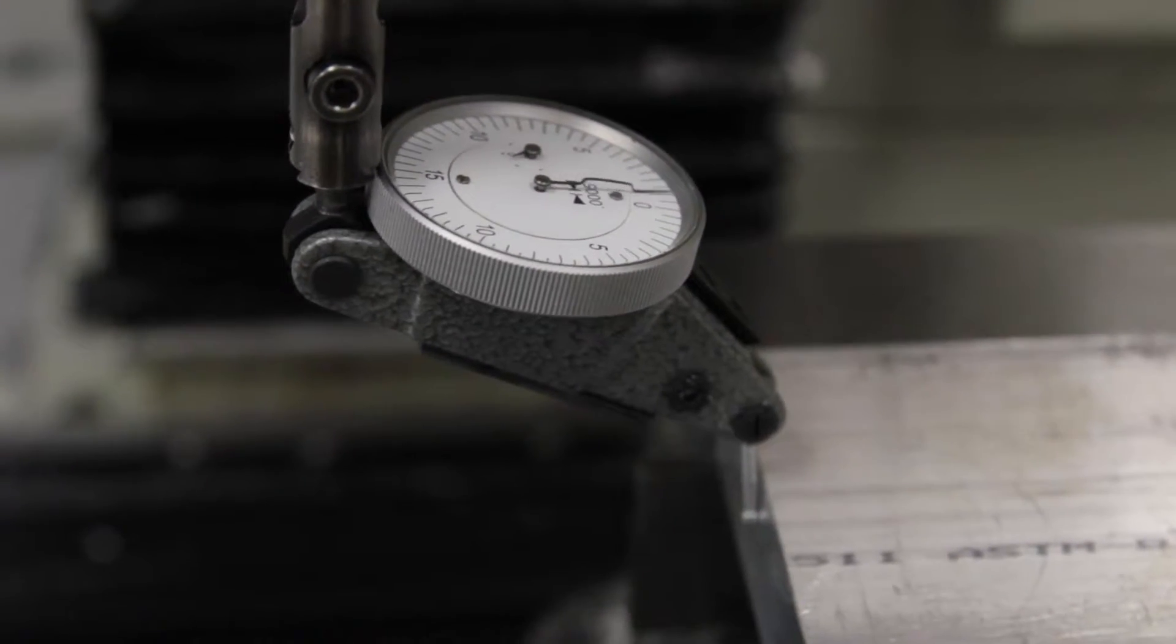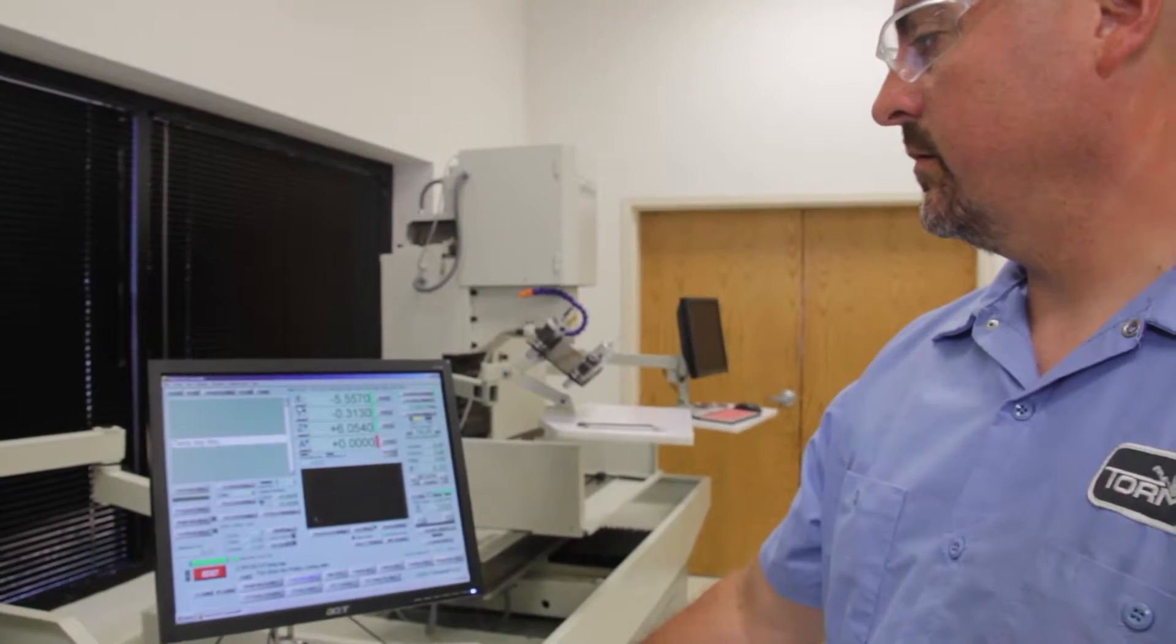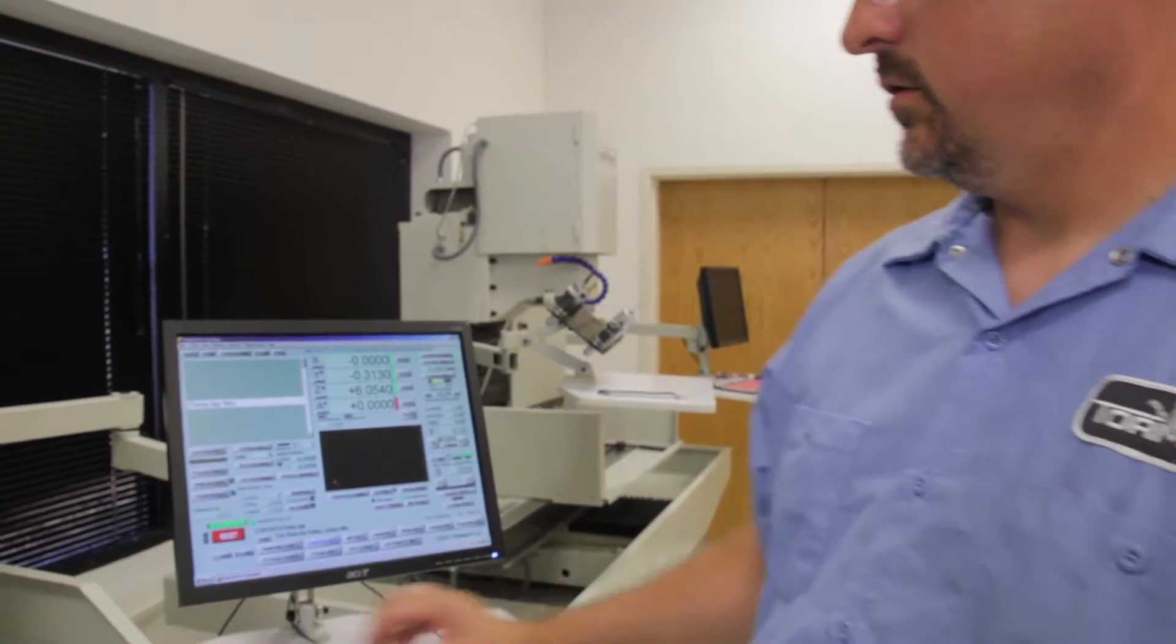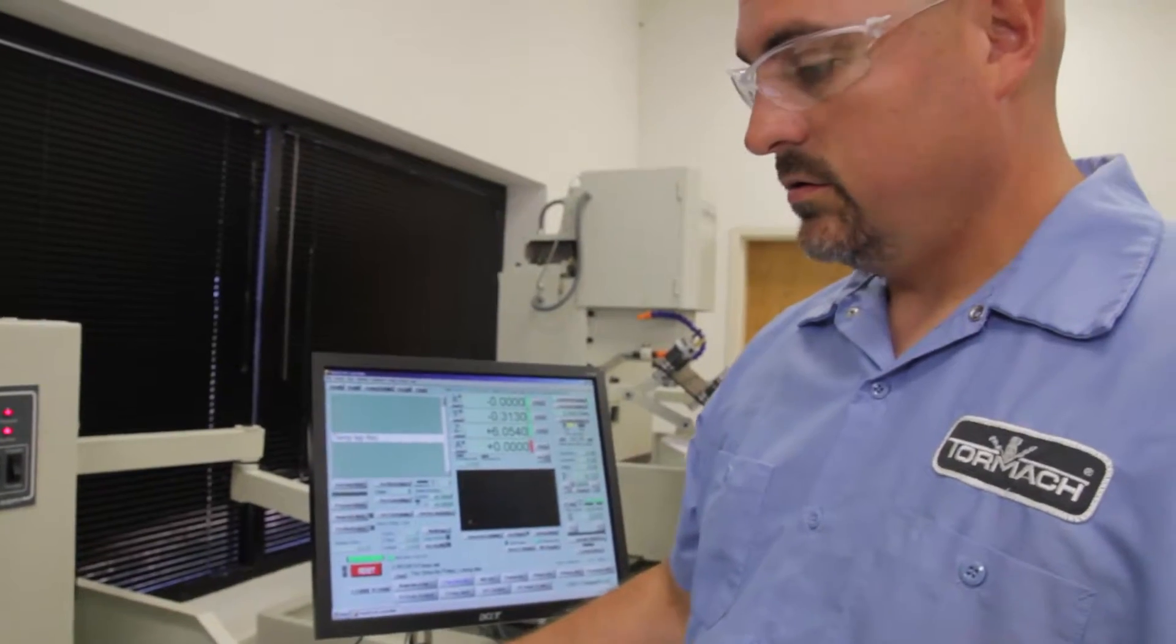With that, zero the DRO. Now jog your indicator up off of the part.